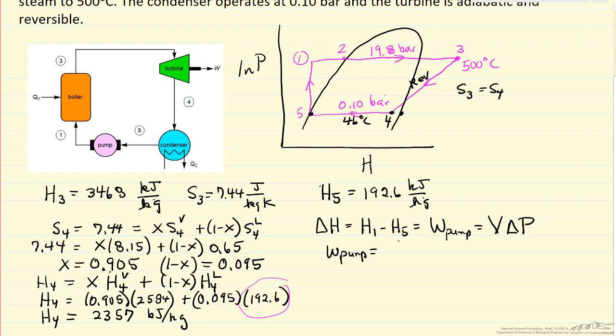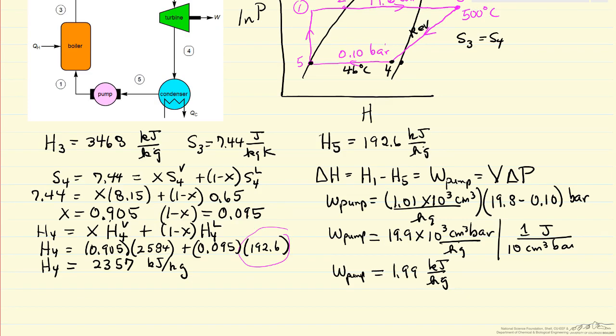Let's calculate the pump work: W_pump = V × ΔP = V × (19.8 - 0.1) bar. Converting to kilojoules using the appropriate conversion factors, including 1 kJ = 10³ J, I get W_pump = 2.0 kJ/kg in terms of significant figures.